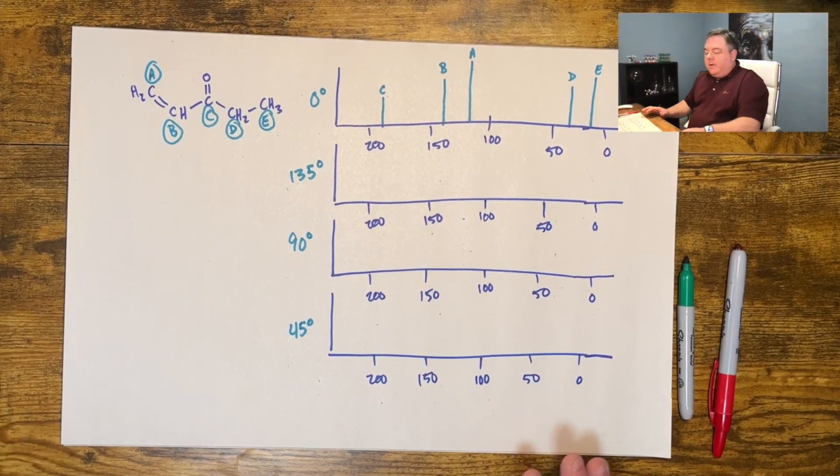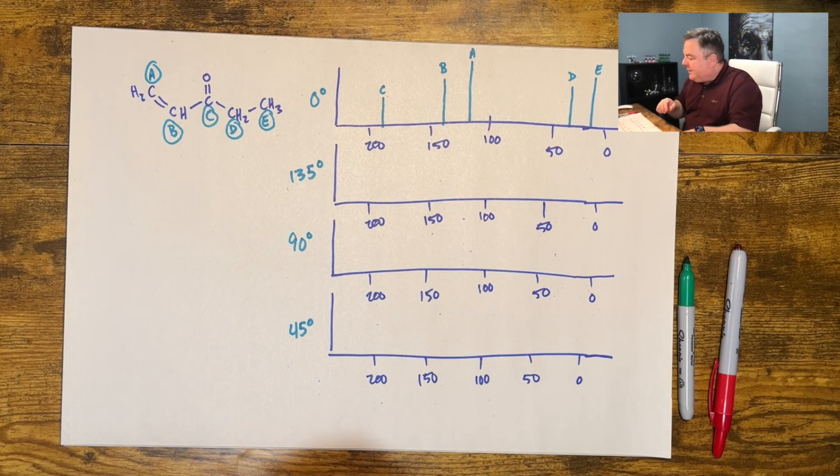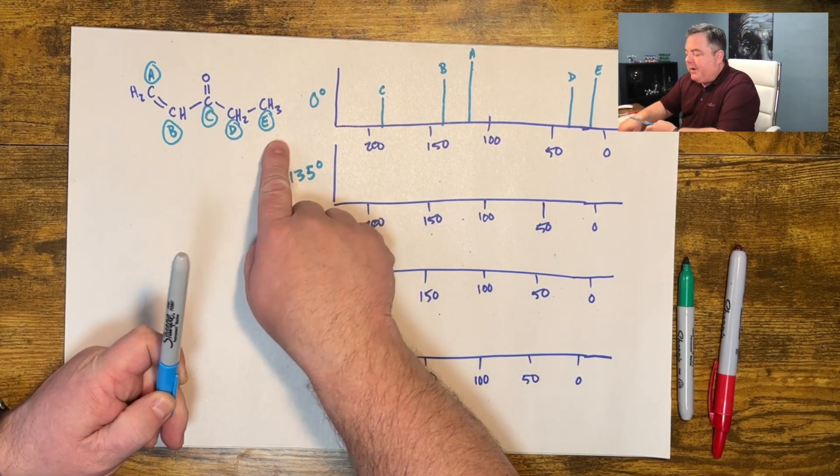DEPT allows us to see on every carbon atom how many hydrogens are there. Is it a CH3 or a CH2 or CH or a carbon with no hydrogens? That's going to be huge for us to figure out what our molecule is. Let's take a look.